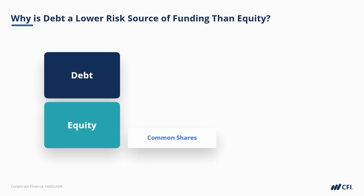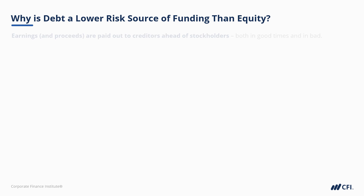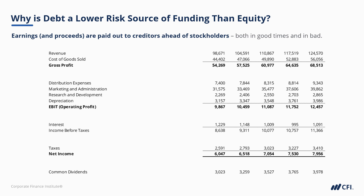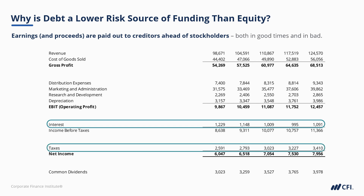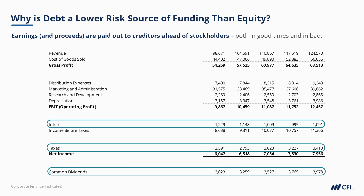At the very bottom of this capital stack is equity — common shares specifically. At the very top is debt — senior debt specifically. Because of this seniority, earnings are paid out to creditors ahead of stockholders, both in good times and in bad. In good times, if you look at this example income statement, you'll see a healthy profitable company. You'll notice that interest is paid out of EBIT — earnings before interest and taxes. Then taxes, and then common shareholders are paid their dividend last, out of the net earnings after interest and taxes, all the way down at the bottom of the income statement.